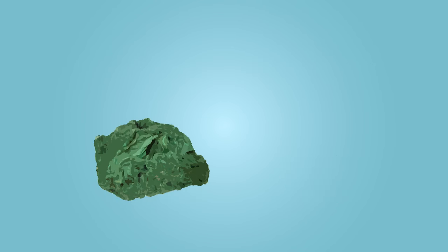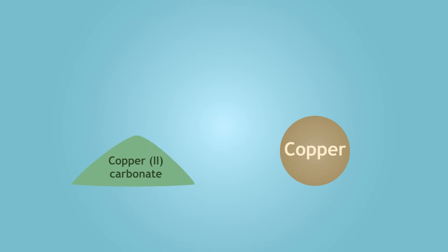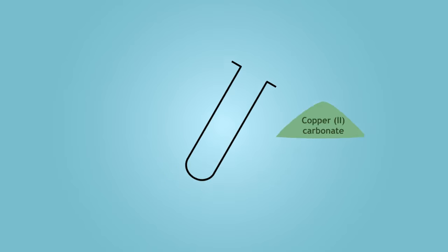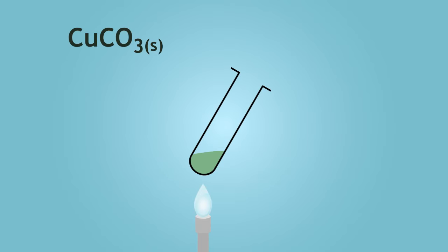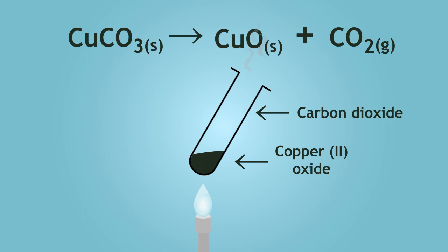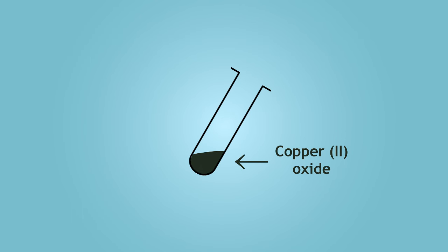We can mimic the extraction of copper from malachite using copper 2-carbonate powder. Copper 2-carbonate is a green solid that thermally decomposes to form copper 2-oxide and carbon dioxide upon heating. Copper 2-oxide is a black powder, and believe it or not, we can actually extract copper metal from copper 2-oxide.